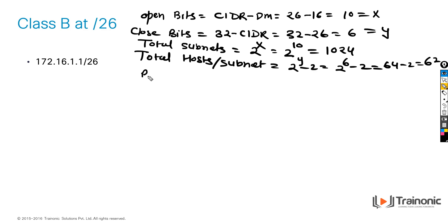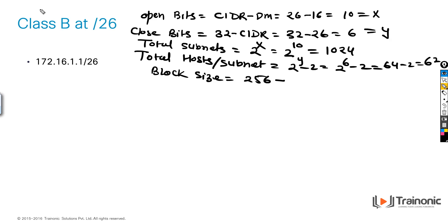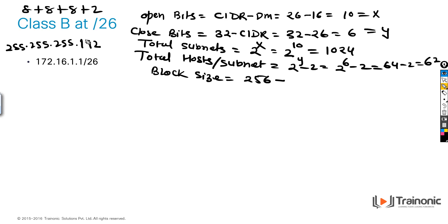Now we have to get block size. Block size is 256 minus the subnet mask value. At /26, that means 8 plus 8 plus 8 plus 2 bits. When 2 bits are on, the decimal value is 192. So block size is 256 minus 192, which equals 64.